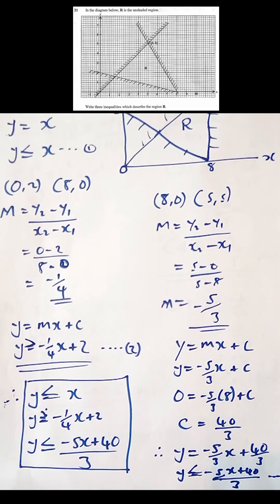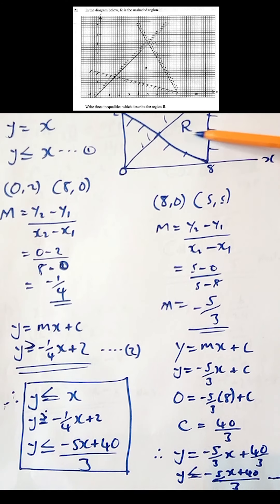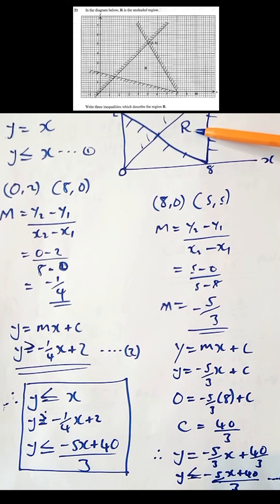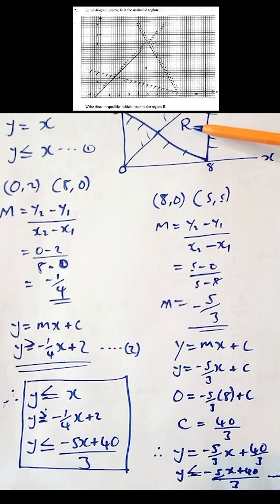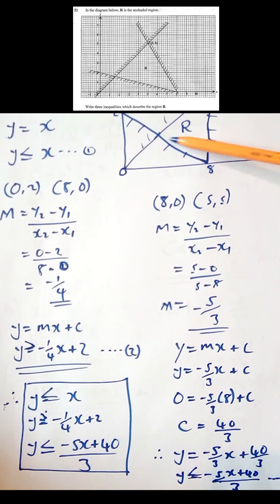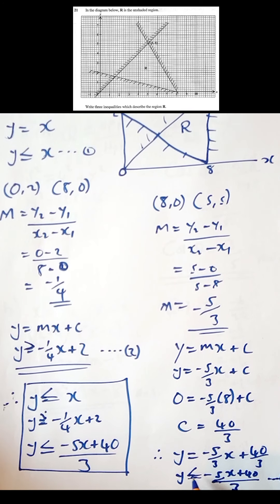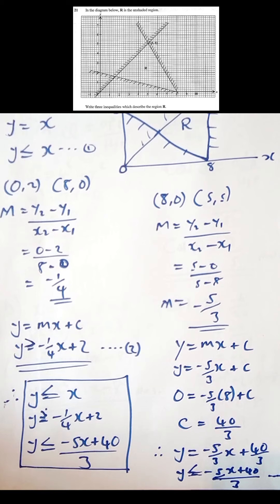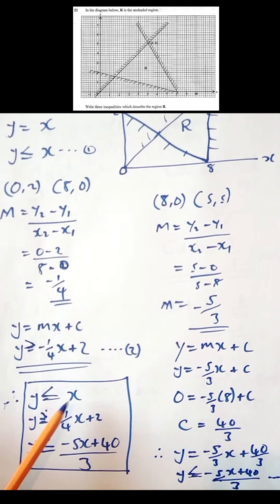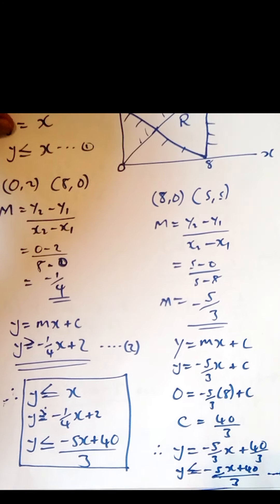Considering this line, the unshaded region is on the lesser side of the line. So we use 'less than or equal to' because the line is full and not dotted. The inequality is y ≤ -5/3 x + 40/3. In summary, we now have all three inequalities for the region.